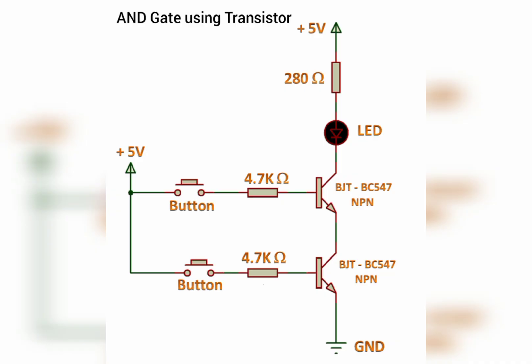This is a schematic diagram for the AND logic gate using transistors, which works similarly to the AND gate using switches. We also need two inputs and one output — buttons and an LED. The switches are connected in series in the AND gate using switches, and similarly we connect the transistors in series, so that until both buttons are closed, the LED will not glow. That works in line with how the AND gate logic works.